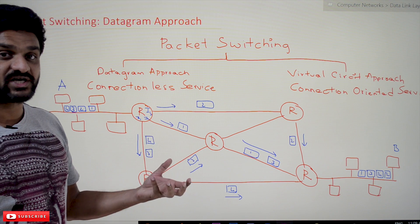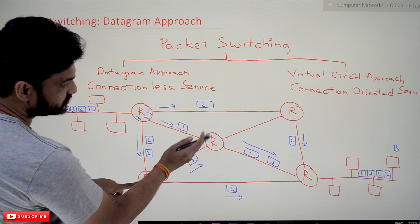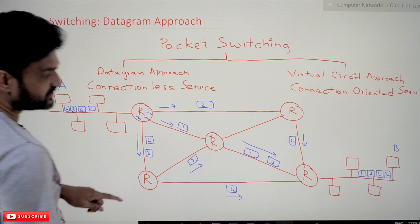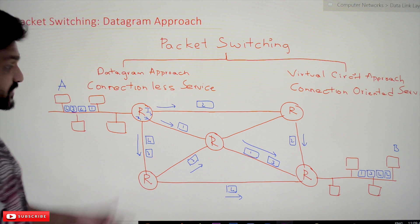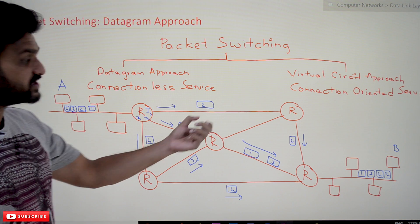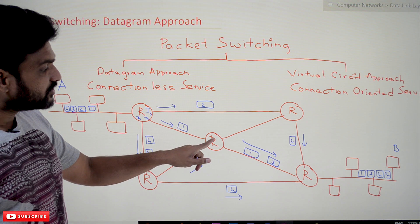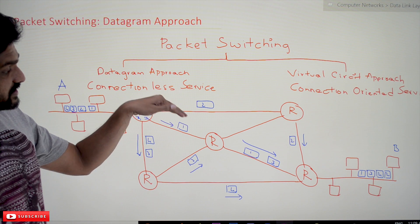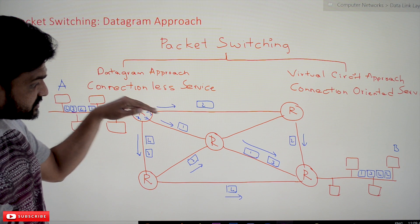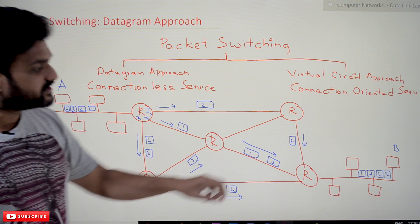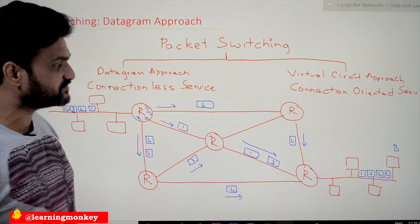Based on availability at those interfaces, the packets get transmitted. At the next router, packet 3 is transmitted on one line and packet 4 on another. Based on the distances between routers, transmissions are ordered — for example, if the path is shorter, packet 3 arrives first. There are also different types of delays, which we'll discuss in later videos.